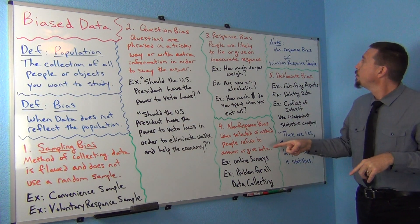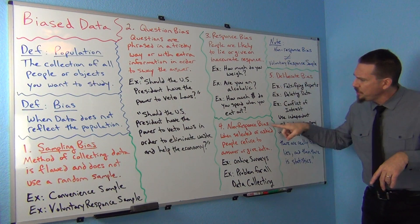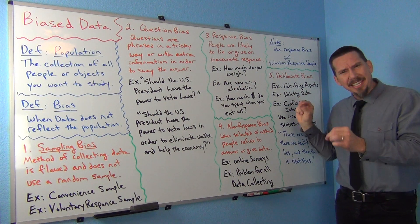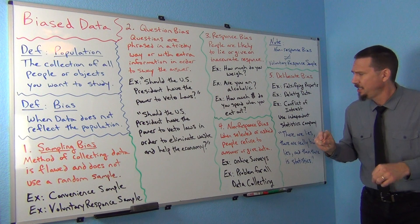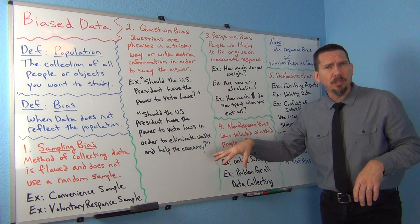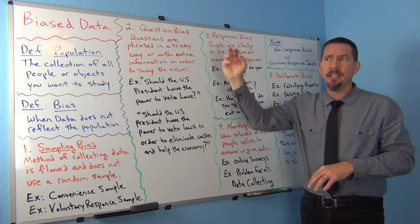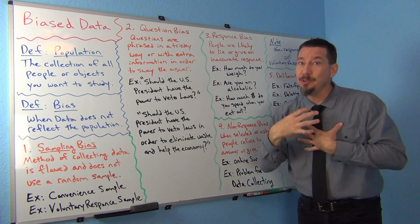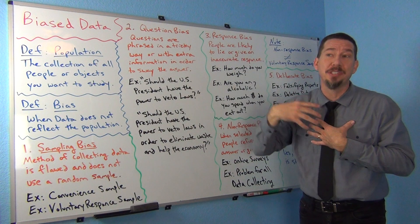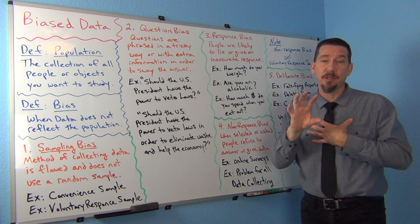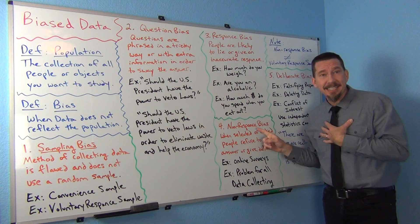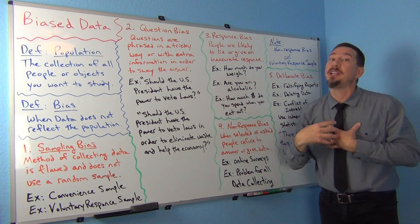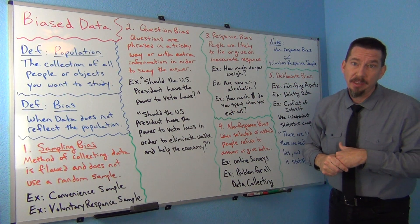One quick word that my students always get confused of is they confuse non-response bias with voluntary response samples. For some reason they do sound a little bit alike, but they are quite different. Remember voluntary response sample means you put a survey out into the world and allowed people to select themselves to be in the data. In other words, they chose you, you didn't choose them or the computer didn't choose them. They chose themselves to be in your data. That's voluntary response sample. Non-response bias means the computer randomly selected them or you selected them, but then they don't want to talk to you once you have selected them.